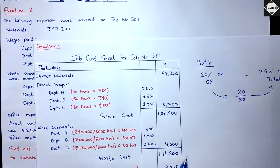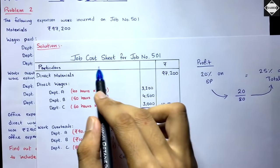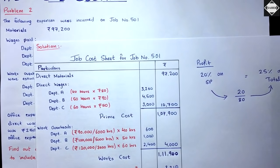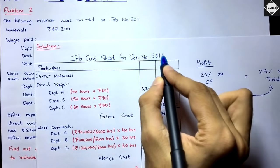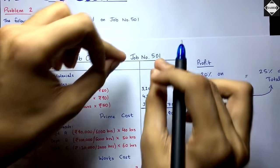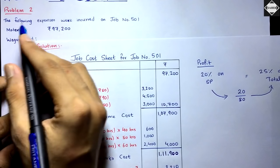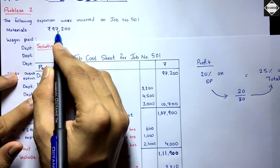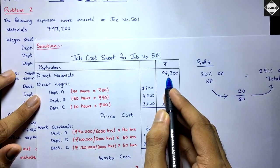Now let's go to the solution. I've already prepared everything to save time, so let's understand how to prepare this job cost sheet for job number 501. The important thing to keep in mind is we are only concerned about job number 501 — only the details of this job come into the cost sheet. So the first item is direct materials: ₹97,200, taken as it is.